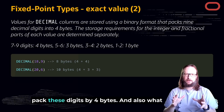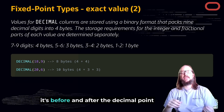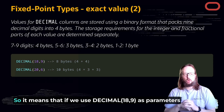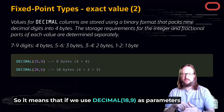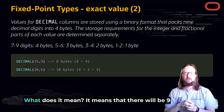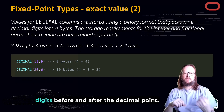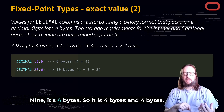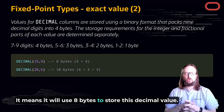DECIMAL columns are stored in binary format, and digits are packed by 4 bytes. What comes before and after the decimal point are stored separately. For example, DECIMAL(18, 9) means 9 digits before and 9 digits after the decimal point. Since 9 digits require 4 bytes, it will use 8 bytes total to store this decimal value.